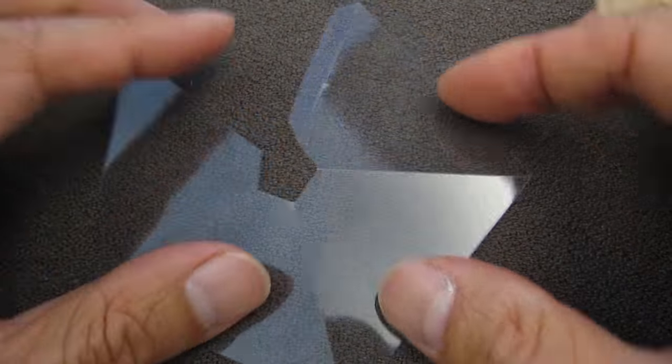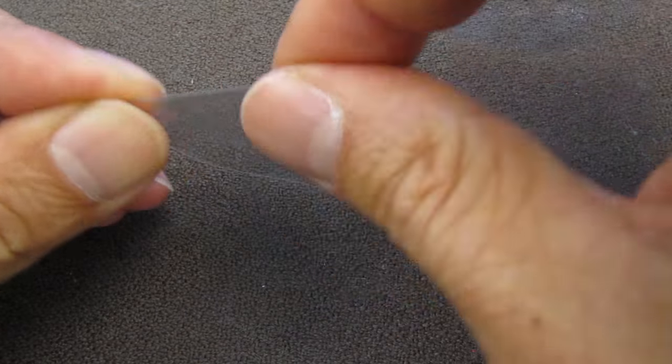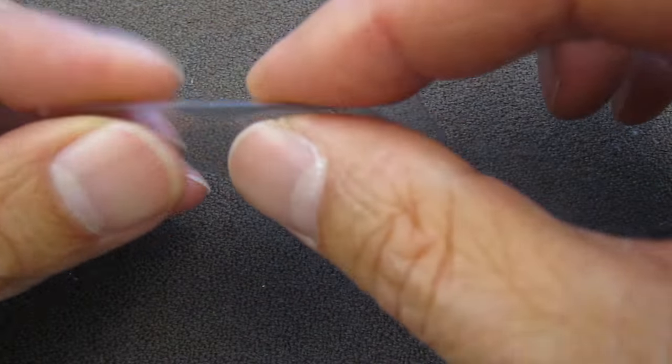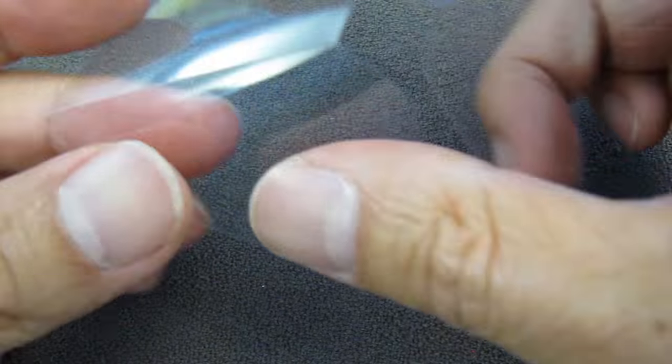Now remove the paper and we have this nice pattern that will become our so-called lens for the hologram. Scoring the lines makes it much easier to fold the plastic into the final shape of a pyramid.